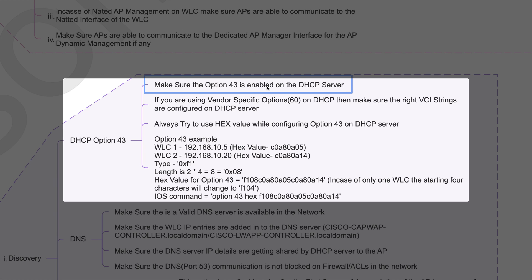Your DHCP server can be a Linux one, a Windows one, an IOS router, or a switch — but you have to make sure Option 43 is configured on that particular DHCP server. You also have to make sure your DHCP server is providing that information to your AP so it can try to send the join request to the WLC.